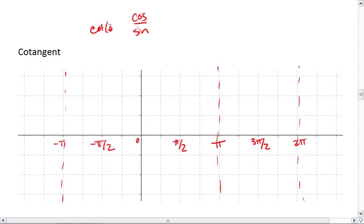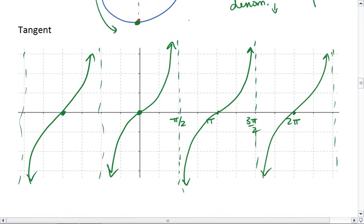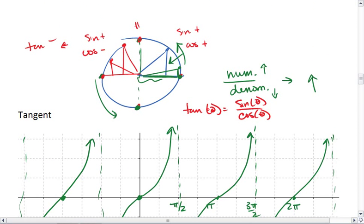We get these vertical asymptotes when sine is 0 for cotangent, just like for tangent we had vertical asymptotes whenever cosine was 0. And that occurred at pi over 2 and 3 pi over 2.